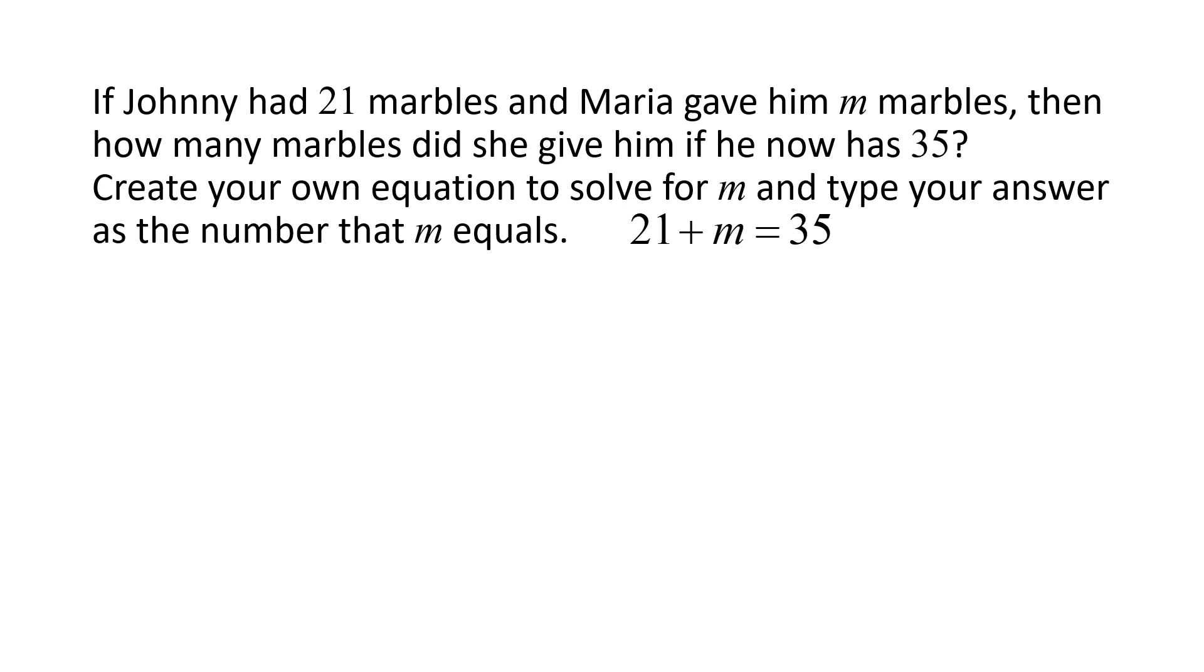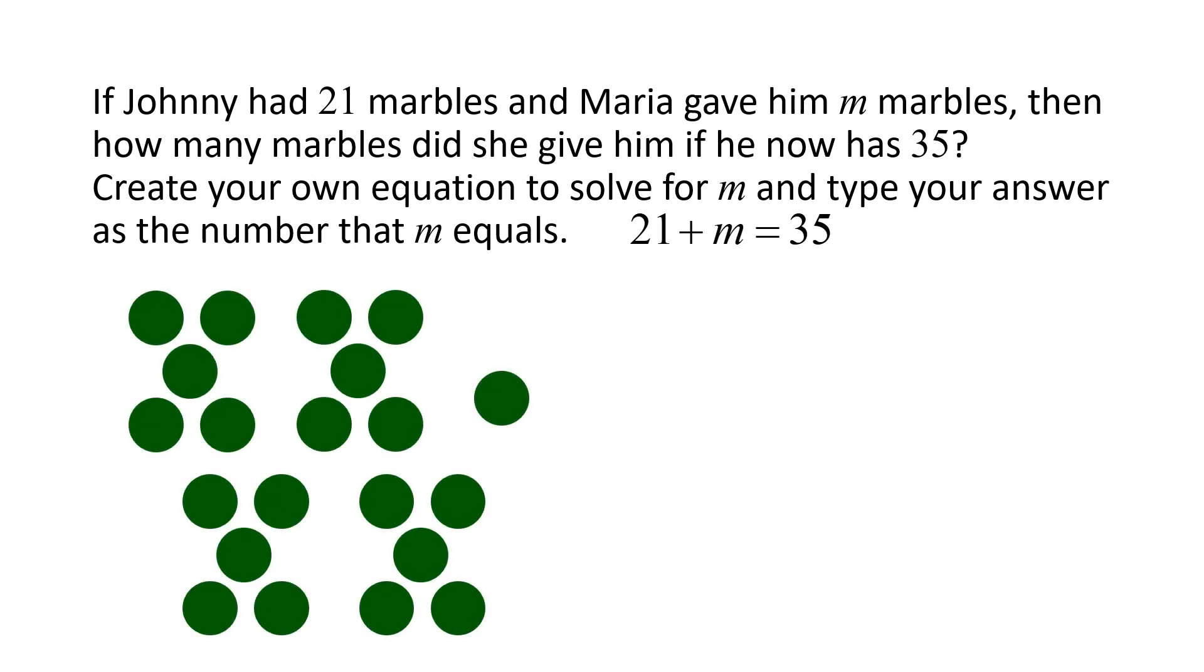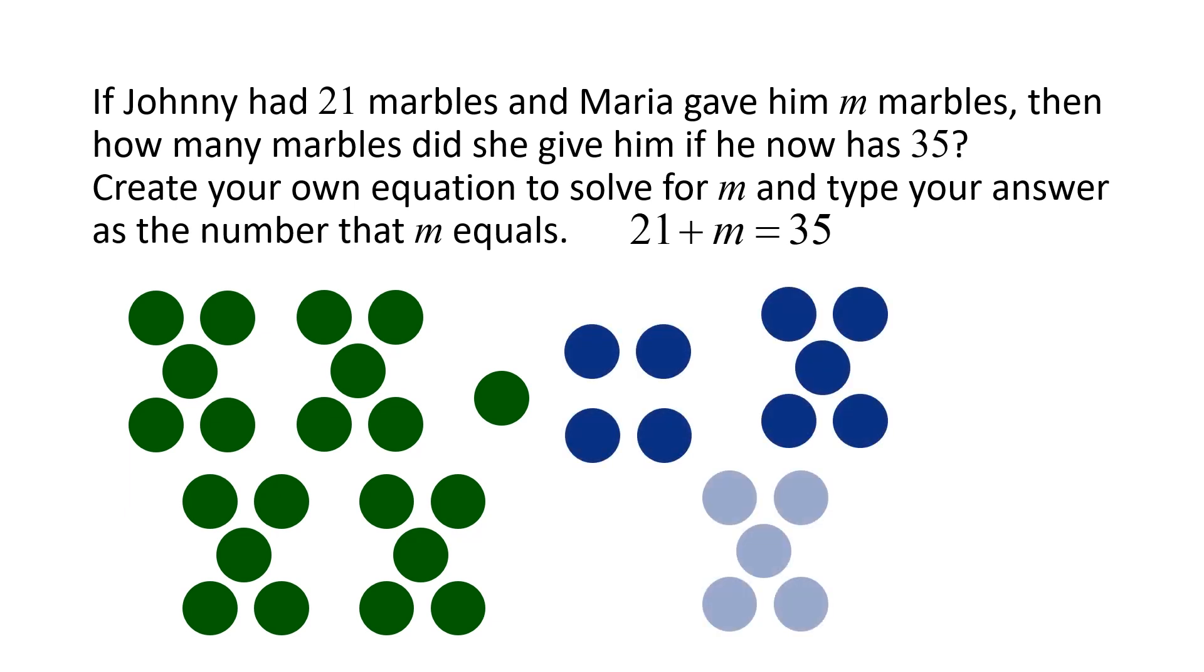We can draw a model to show the original 21 marbles, and then we could keep adding one marble until we get a total of 35 marbles. Or, we could find the difference between the two amounts. 35 minus 21 equals 14. This means that Maria gave Johnny 14 marbles, so m equals 14. Great job!